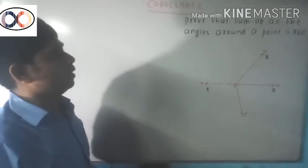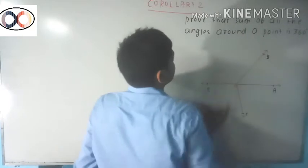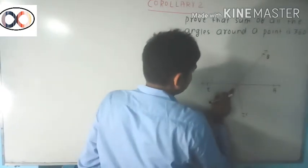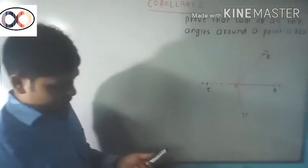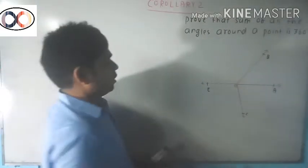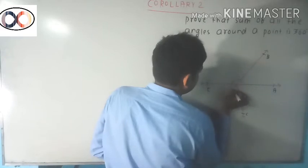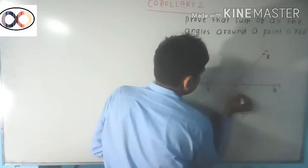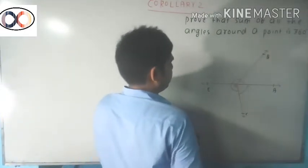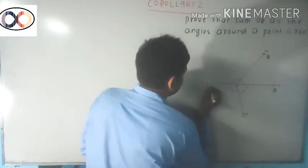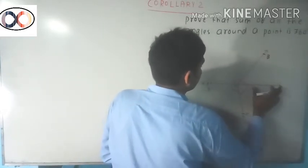Now prove that the sum of all the angles around a point is 360 degrees. Here O is the point. We need to prove that all the angles around O sum to 360 degrees. For construction, we draw OD such that OD is the opposite ray of OA.